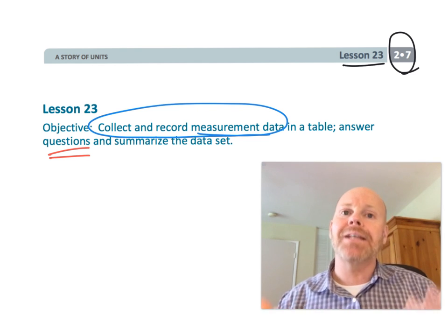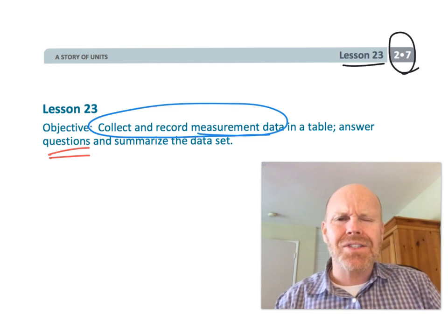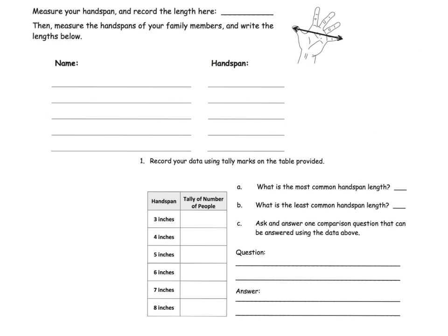So let's get started on this. For the homework, of course students are going to go home and then they have to start measuring data that is available at home. And in this case they're going to be measuring hand length, handspans of their family members.